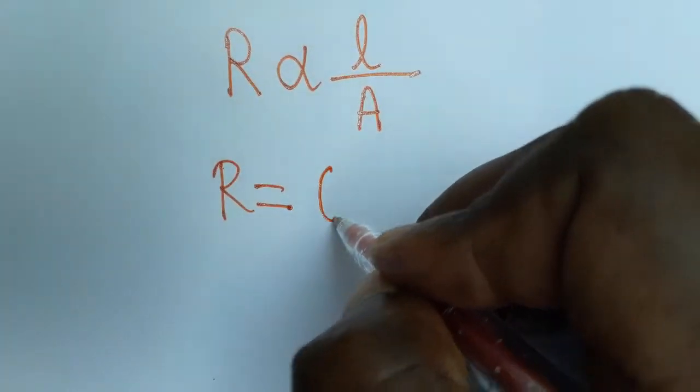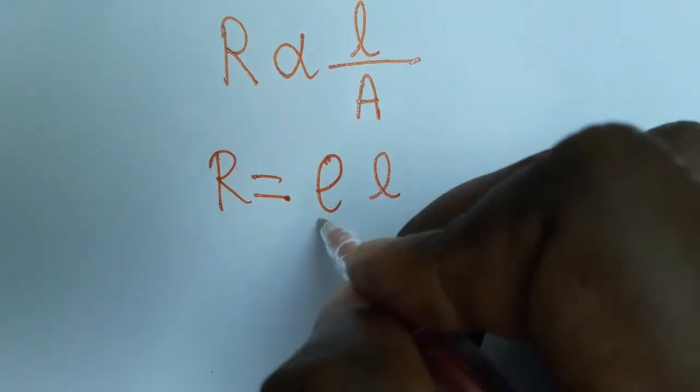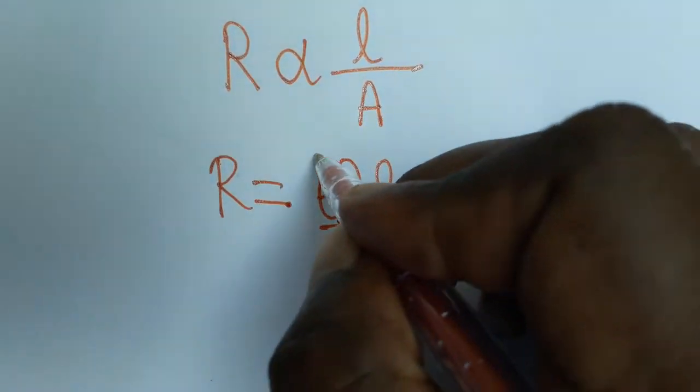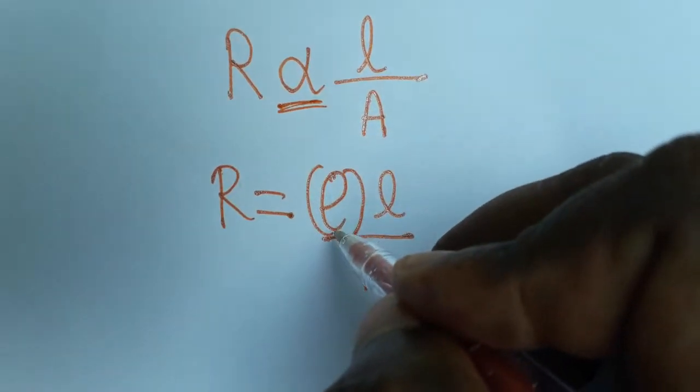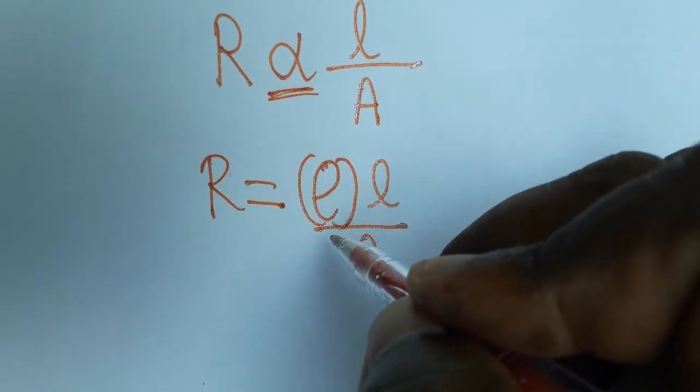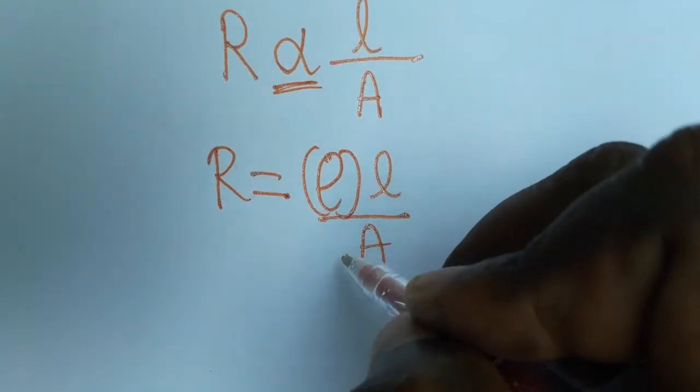So resistance is equal to a constant times length by area. When you are removing the directly proportional sign, you should include a constant. This constant is called resistivity.